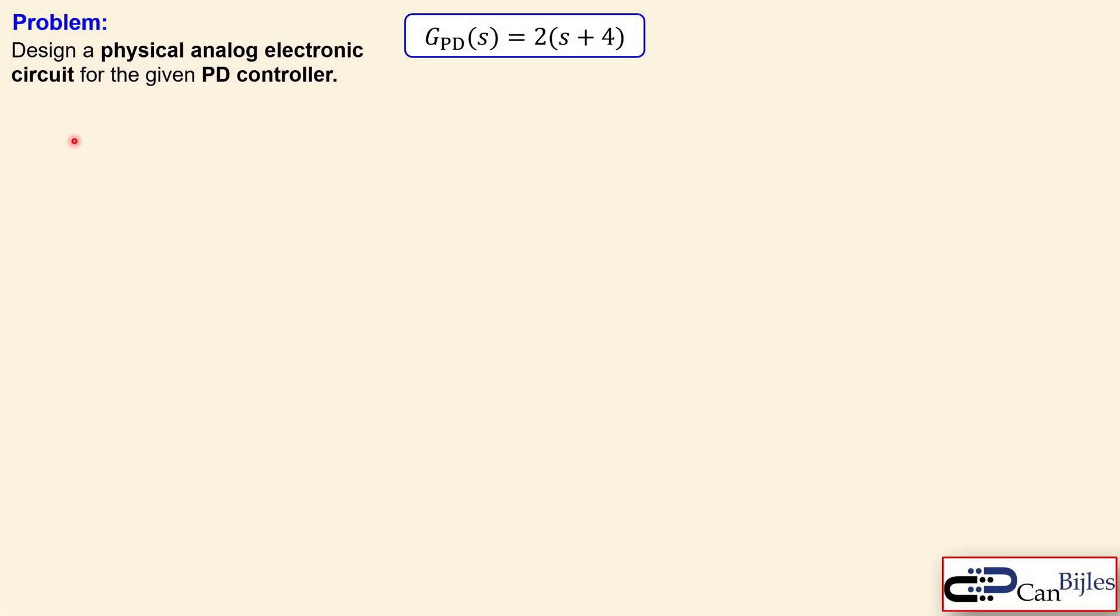Let's look at an example. We have the following problem which is a design problem. We would like to have a physical analog electronic circuit for a given PD controller transfer function which is GPD equals 2 times S plus 4 in the Laplace domain. So how can we realize this physically? That's the question in place here.